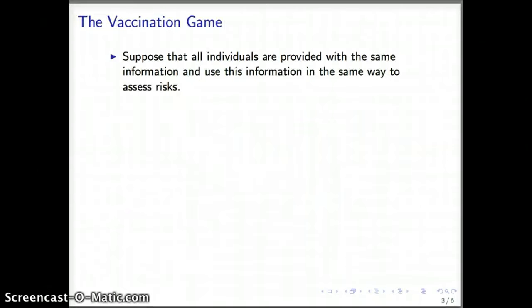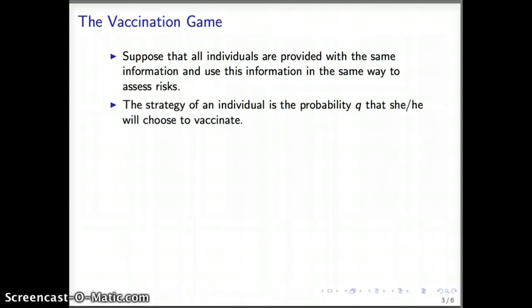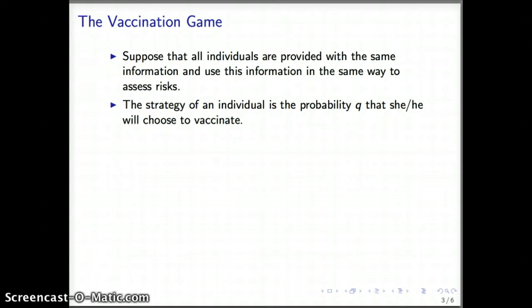Here are some of the assumptions in this formulation or methodology. We assume that we have a population of people which all have access to the same information and they use this information in the same way to evaluate or assess the risks they have. The strategy — and this should immediately ring bells about what we had previously learned about mixed strategies — the strategy of an individual is the probability Q that this individual will choose to vaccinate. So the strategy is a probability; it's a mixed strategy.